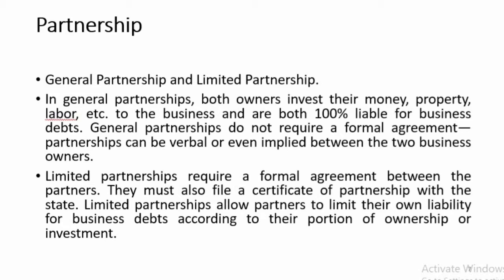Your partners are 100% liable for the business. You can share the profits. General partnership is an informal type of agreement — it is not in written form. You can establish it verbally as partners. Basically, there are two or more parties involved. The second type of partnership is limited partnership, which is a formal agreement between the partners.